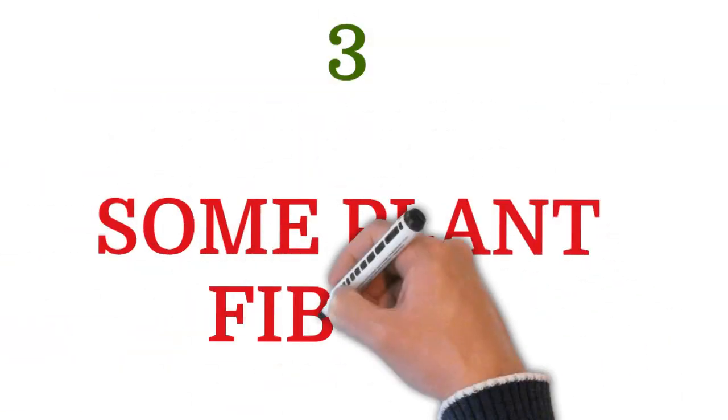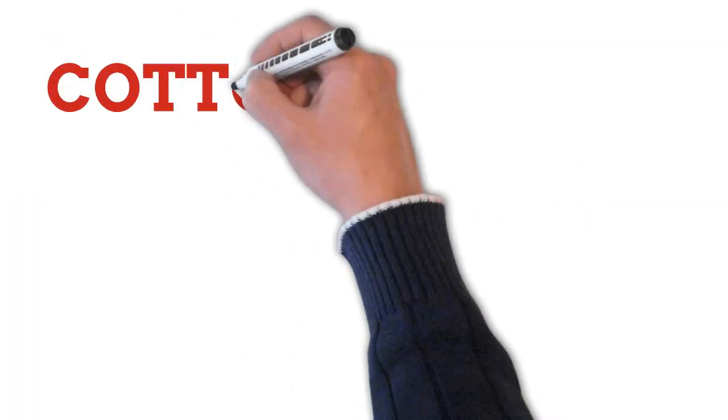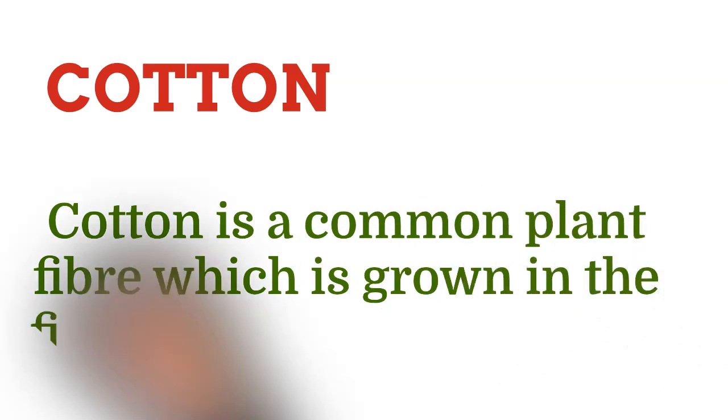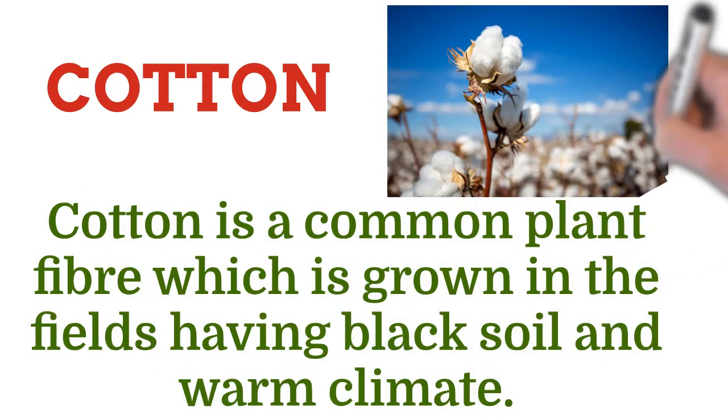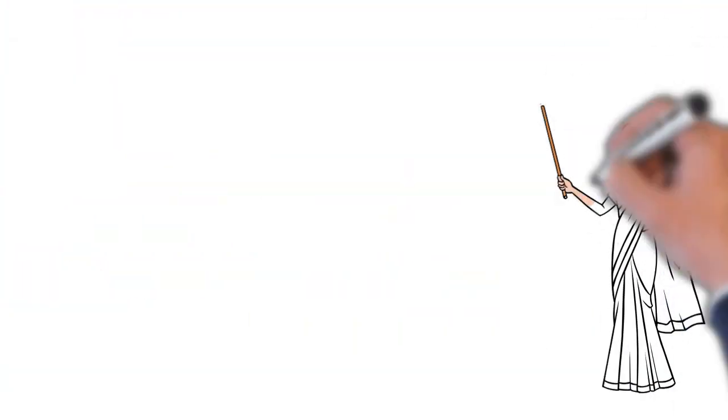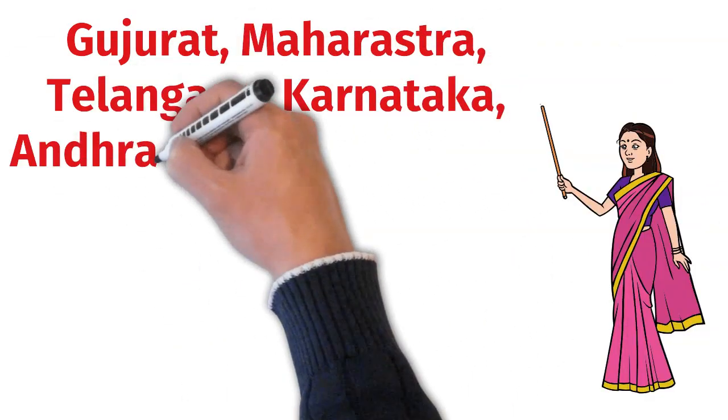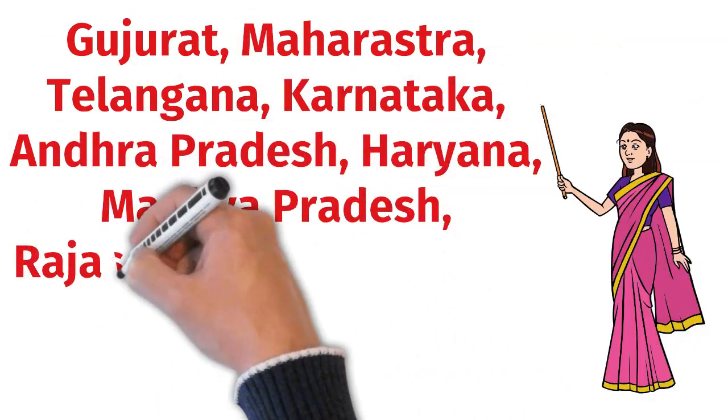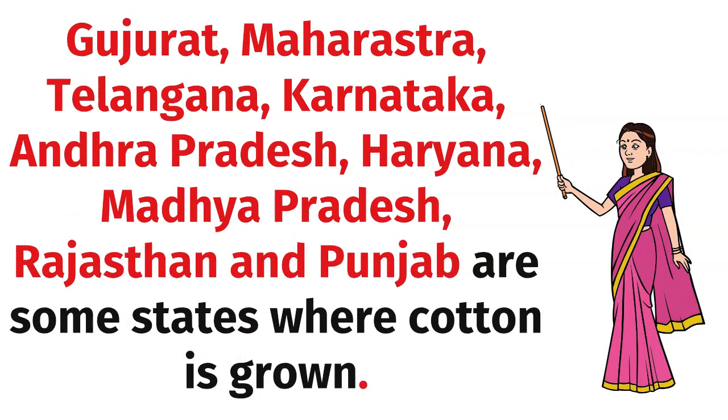Next come to the heading some plant fibers. Cotton. Cotton is a common plant fiber which is grown in black soil and warm climate. Gujarat, Maharashtra, Telangana, Karnataka, Andhra Pradesh, Haryana, Madhya Pradesh, Rajasthan and Punjab are some states where cotton is grown.